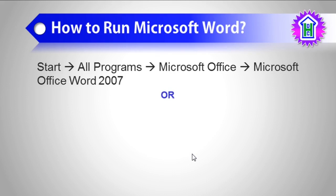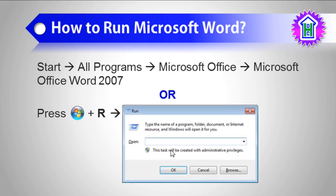If you do so, you will be able to get the Microsoft Word interface. Or what you can do is use the Run dialog box to run it. In the Run dialog box, you need to type the executable file name of Microsoft Word, which is WinWord. After you type WinWord in the Open box, you need to click on the OK button, and you will be able to see the interface of Microsoft Word.